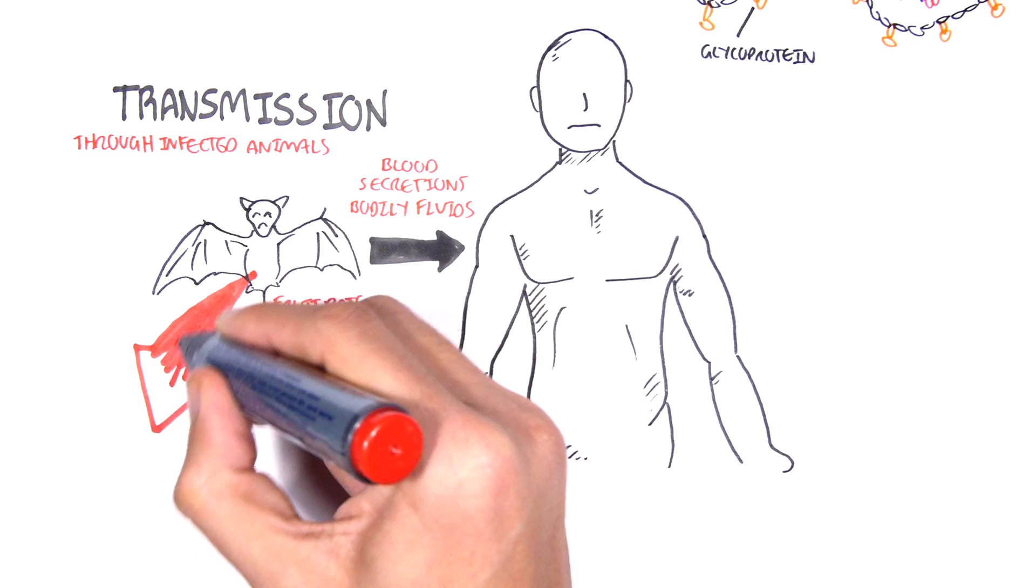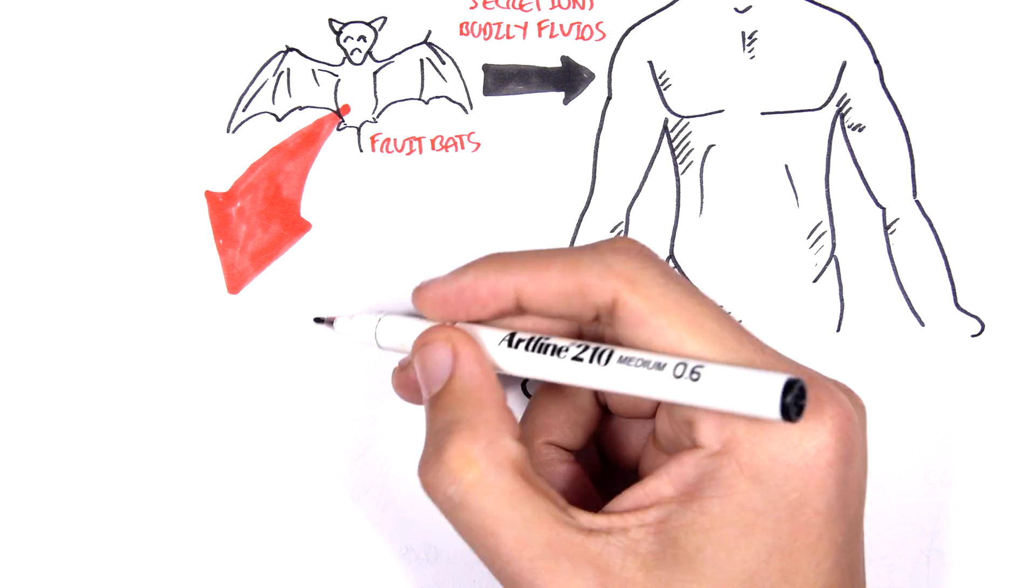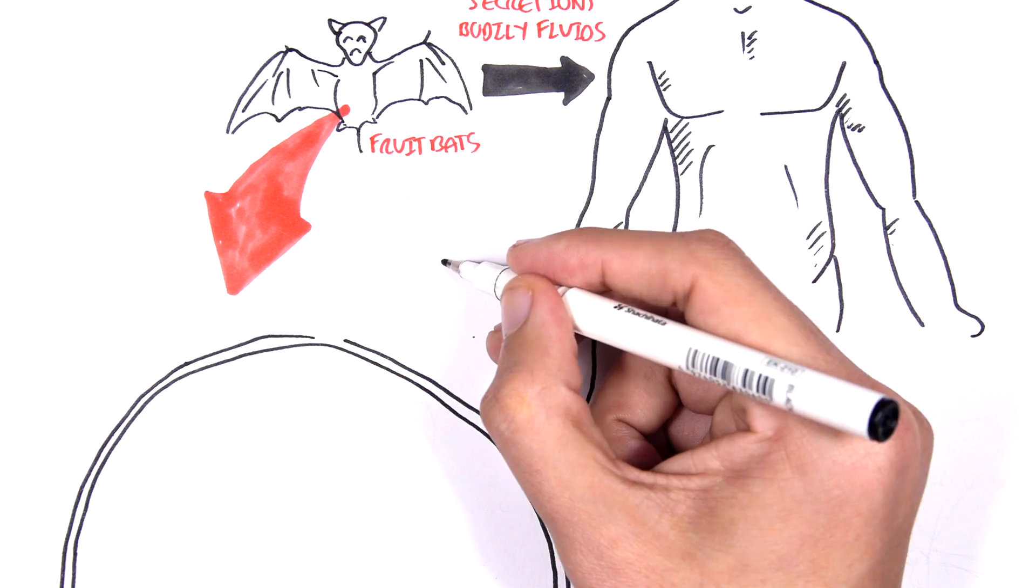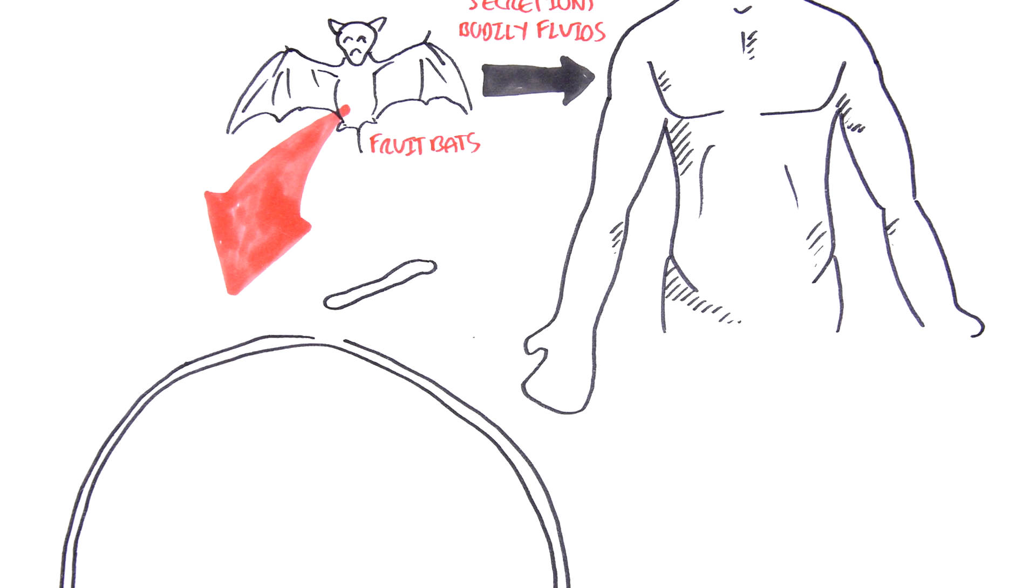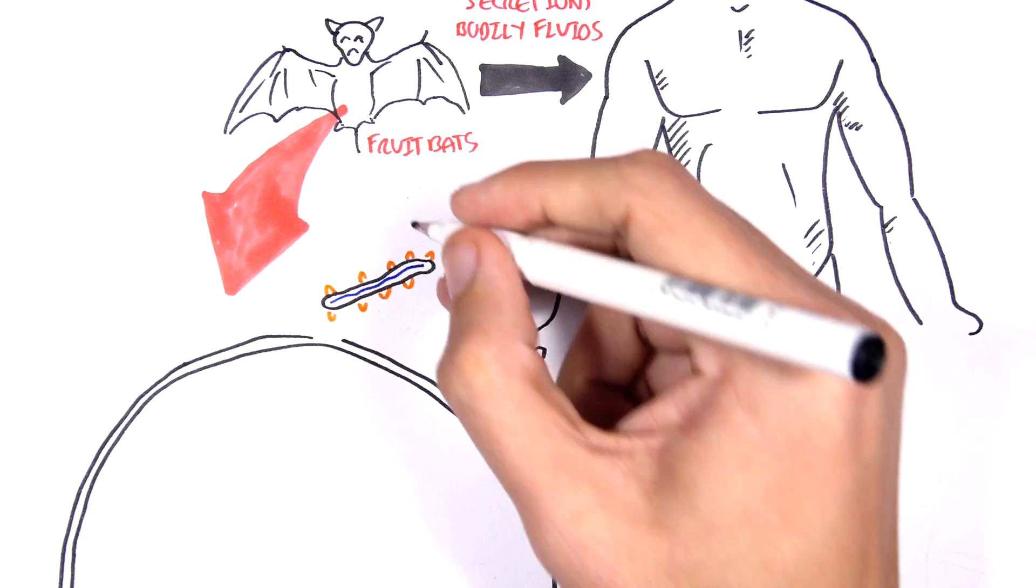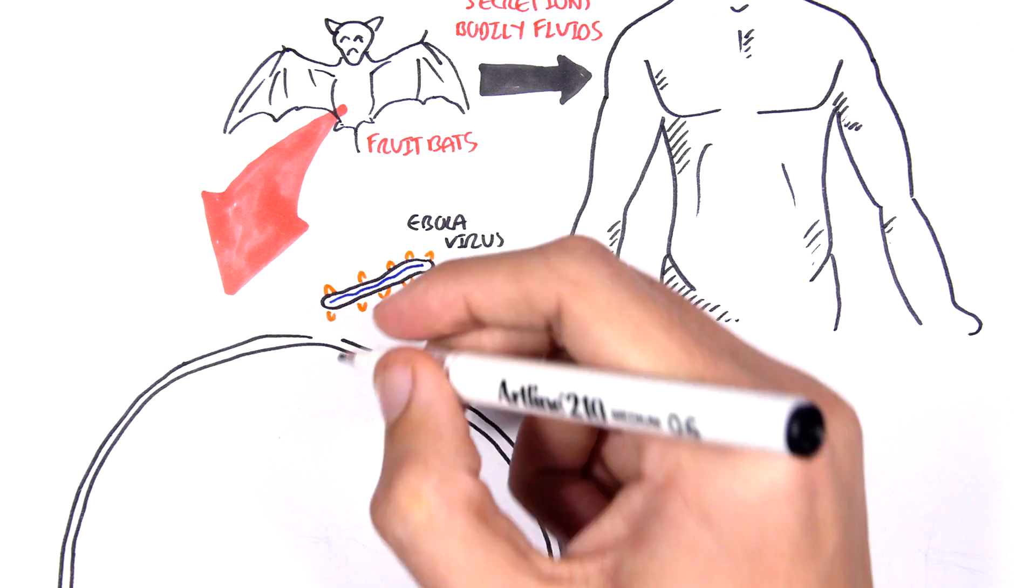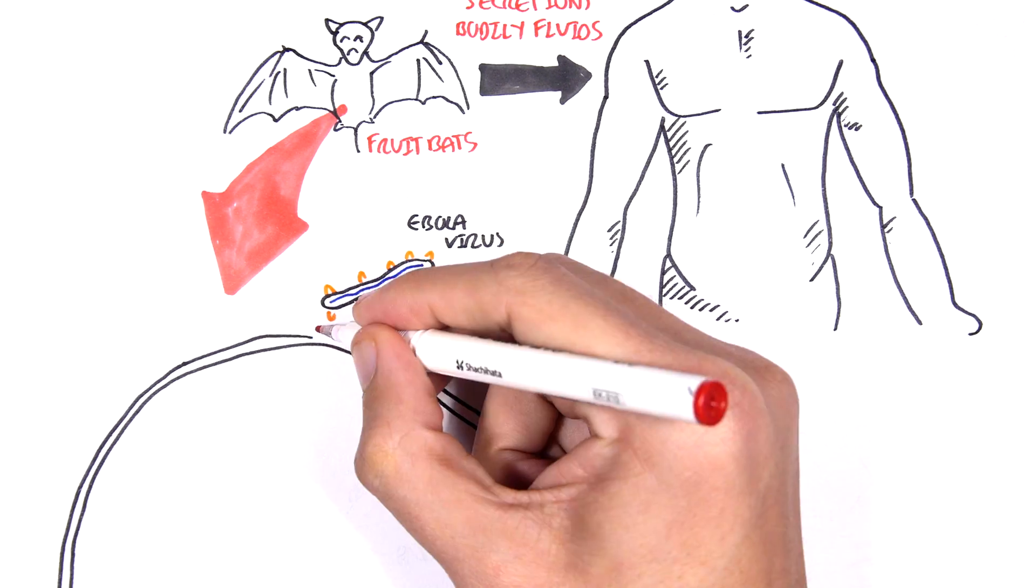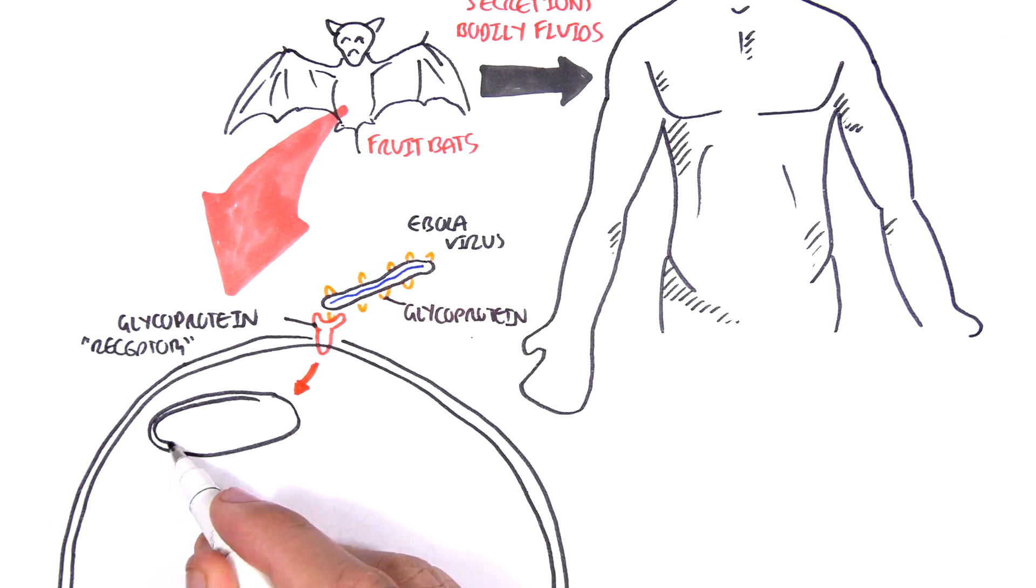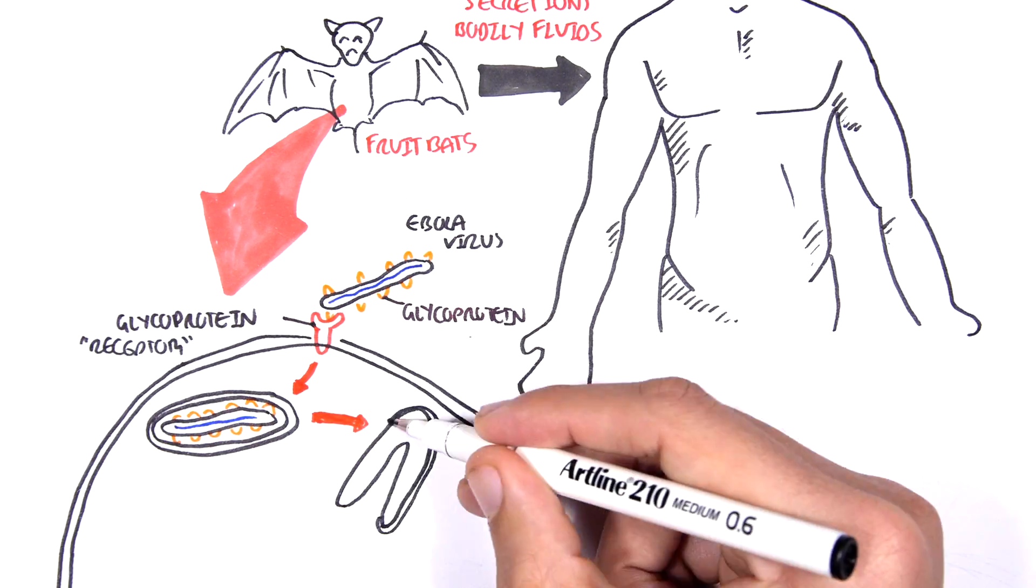So let's see how the Ebola virus first infects the fruit bat. Here I'm drawing a cell of a fruit bat, and the goal of the Ebola virus is to replicate within the fruit bat cell, causing an infection. The Ebola virus contains an outer glycoprotein. The bat cell can recognize this glycoprotein and will think that it's normal, and so this is a way the Ebola virus can enter the fruit bat cell. Once the Ebola virus enters the cell, it will release all its content.